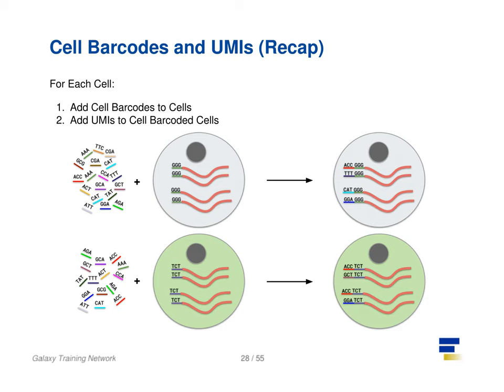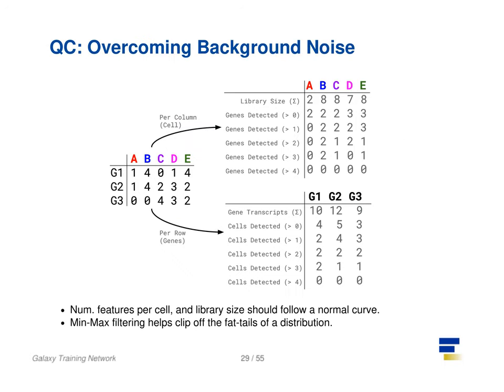After amplification we need to perform some quality control. One way to do this is to set thresholds on the limits of detectability for genes and for cells. Consider an analysis governed only by three genes — G1, G2, and G3 — and five cells — A, B, C, D, and E.